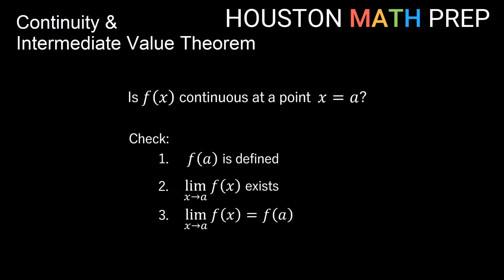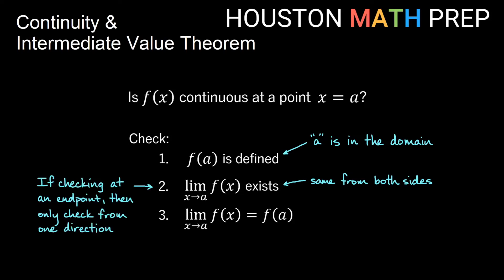In general, to check if a function is continuous at a value x equals a, we need to verify three things. First, is f(a) defined — is a in the domain? Second, does the limit as x approaches a exist — do we get the same y value from both sides? Note: if checking continuity from one side at an endpoint, we only check from one direction. Third, does the limit as x approaches a equal f(a)? If all three conditions are true, then the function is continuous at x equals a.